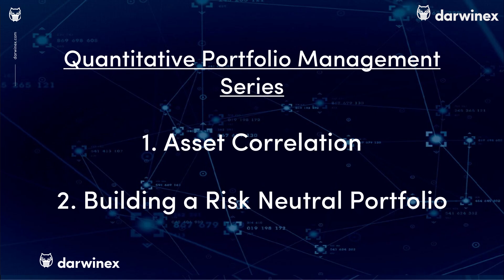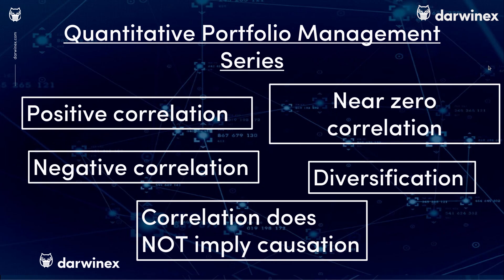In this video, I will start by understanding and explaining asset correlation, and then move forward into creating a risk-neutral portfolio. To understand correlation in numbers: a correlation of zero means that the returns of assets are completely unrelated. If two assets are considered to be non-correlated, the price movement of one asset has no effect on the price movement of the other asset.